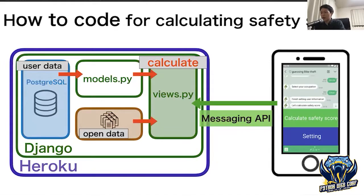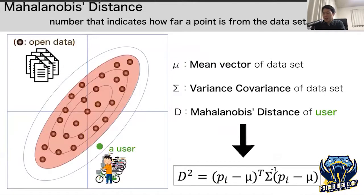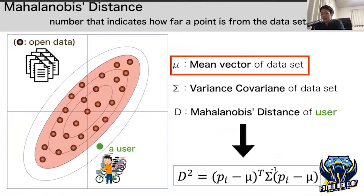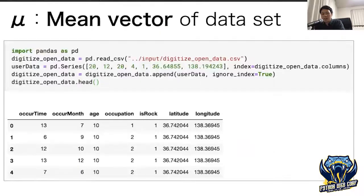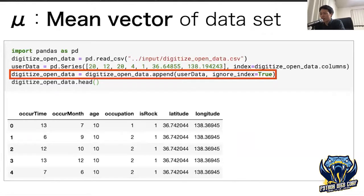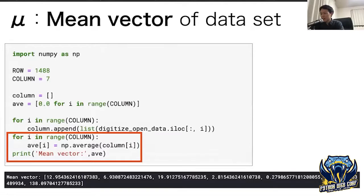Next, I explain how to code for calculating the safety score. As I said earlier, I use Mahalanobis distance. First, prepare the mean vector. The mean vector is calculated including the user data, so I add the user data at the end of the open data. This user data is an arbitrary value — in a real system, it is the values obtained from LINE or stored in the database. Then I create constants for columns and rows and calculate the average value for each column using a for loop. The mean vector has been calculated.